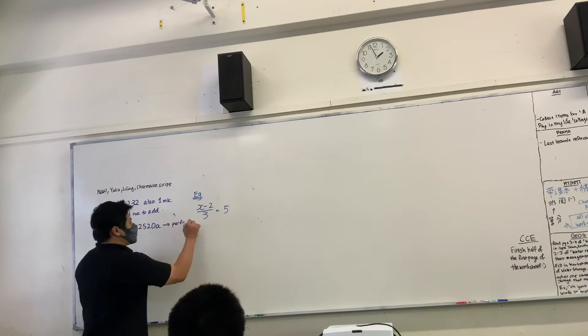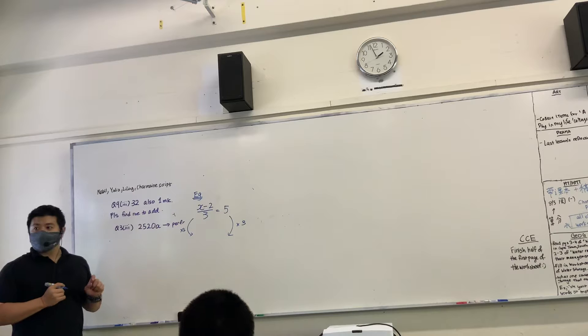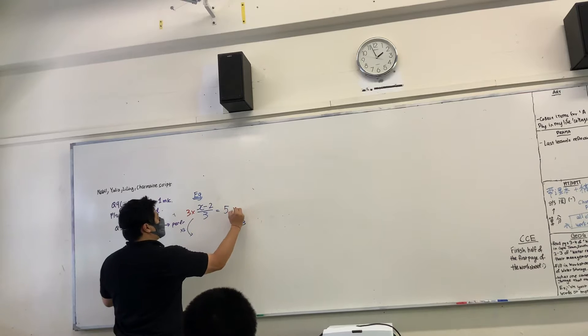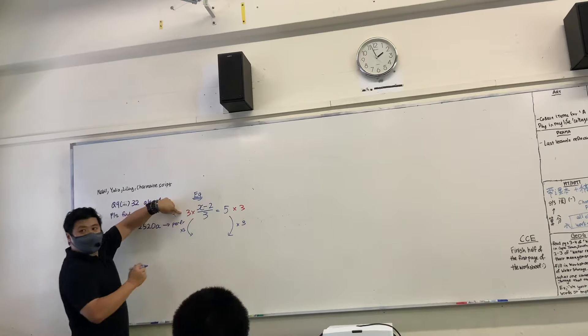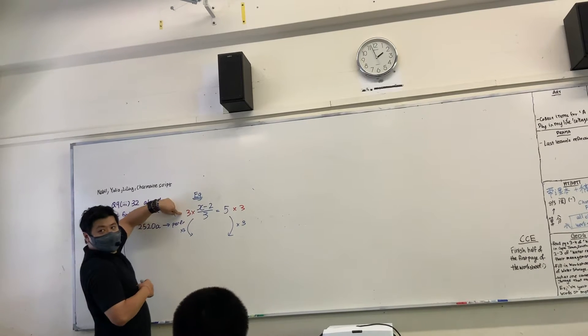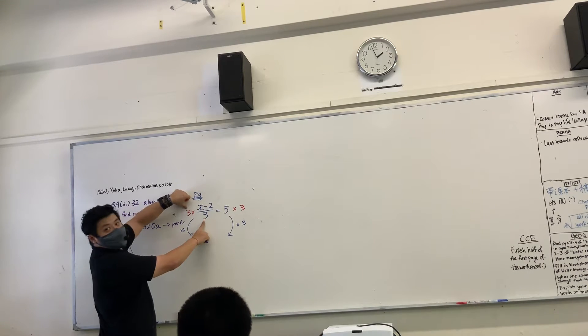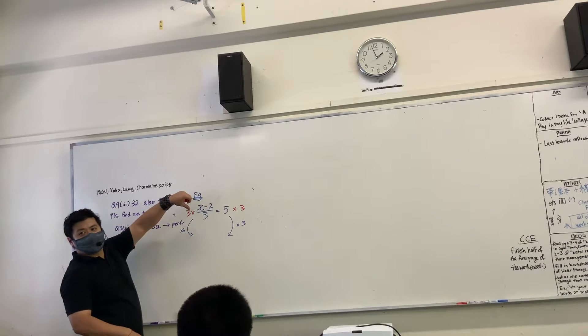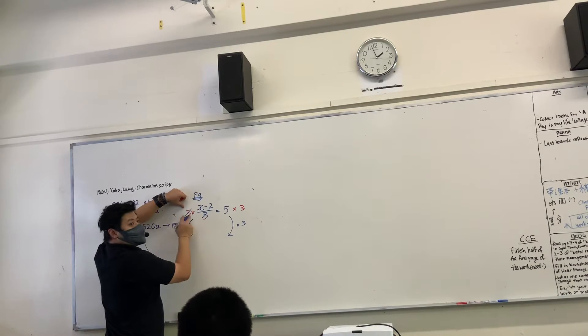You can see from here I can multiply by 3 to both sides. When I do multiply by 3, what will happen is... what will happen to these 2 guys? The 3 and the 3, how will they interact with each other? They will cancel. If it's a division by 3, you replace it by multiplication.